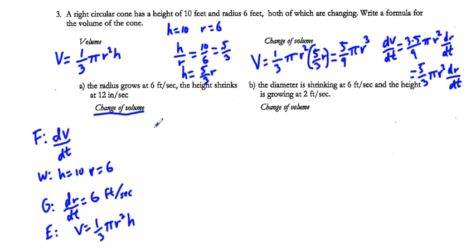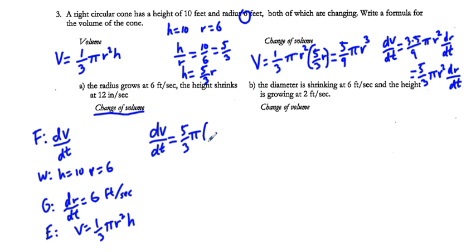Using the formula for change in volume with the radius growing at 6 feet per second: dV/dt = (5/3)π · (6)² · dR/dt, where r = 6 and dR/dt = 6 feet per second. Work all that out on the right side to solve for dV/dt.